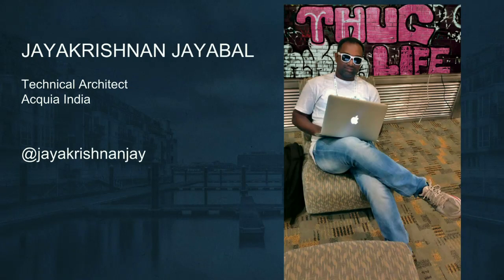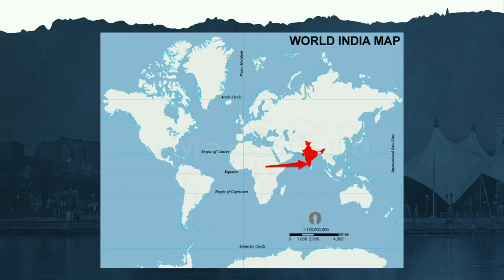This is my colleague JK. Hi everyone. I'm Jay Krishna and Jaypal. I'm working in Acvia as a technical architect. We work out of the south of India. Both JK and I work remotely, although we have an office in Delhi, which is in the north of India. We keep shuttling from the south to the north almost every other week.